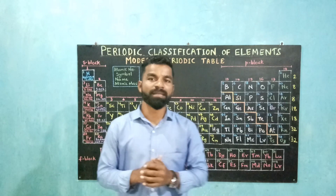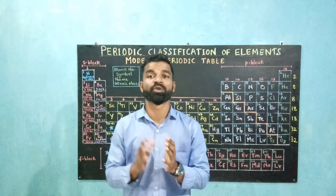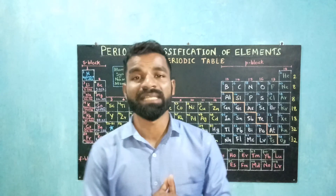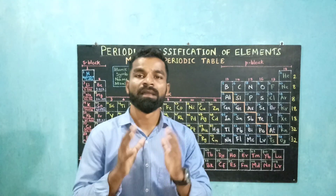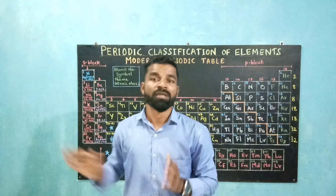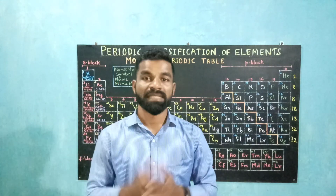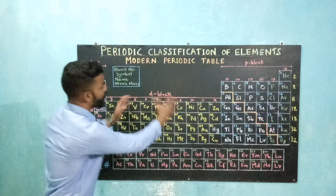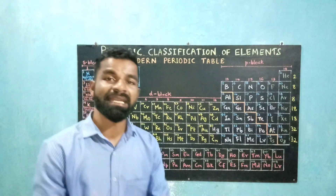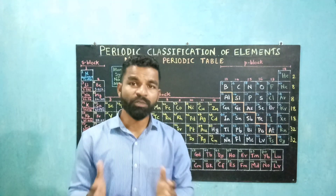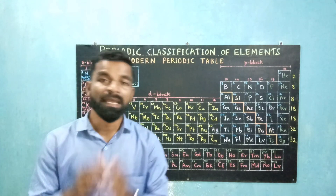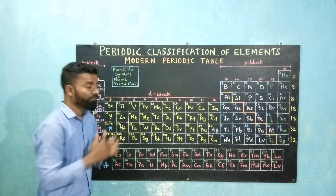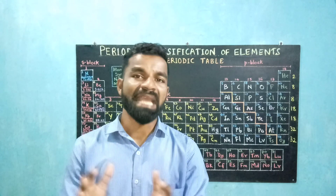Looking at the demerits of the modern periodic table: first, the modern periodic table could not assign hydrogen a proper place. It shows similarities with group 1, so it is placed in group 1, but it also shows similarities to group 17, and it is a non-metal placed on the metal side. Second, the lanthanide series and actinide series are placed separately at the bottom, not in the main body of the periodic table. Despite this, it is easy to remember the properties of an element if its position in the modern periodic table is known, and since the table is divided into 4 blocks, it has made the study of chemistry systematic and easy.